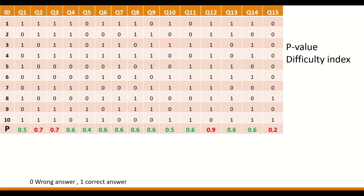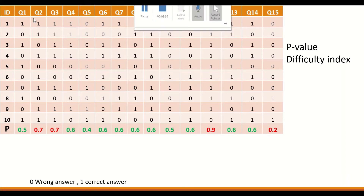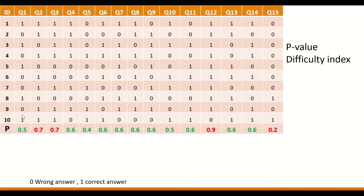This table shows 15 multiple choice questions answered by 10 students. The answer was recorded as 1 for a correct answer and 0 for a wrong answer. To calculate the item difficulty or p-value for each question, add all the correct answers for each question and divide by the total number of students. For question 1, it is 5 correct answers divided by 10, so 0.5. For question 15, 2 correct answers divided by 10 gives 0.2.